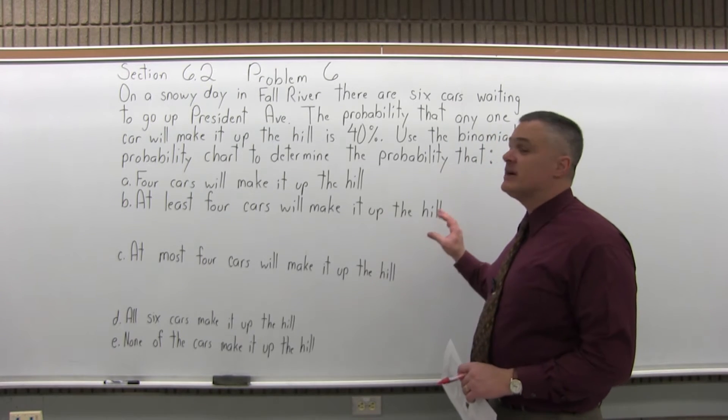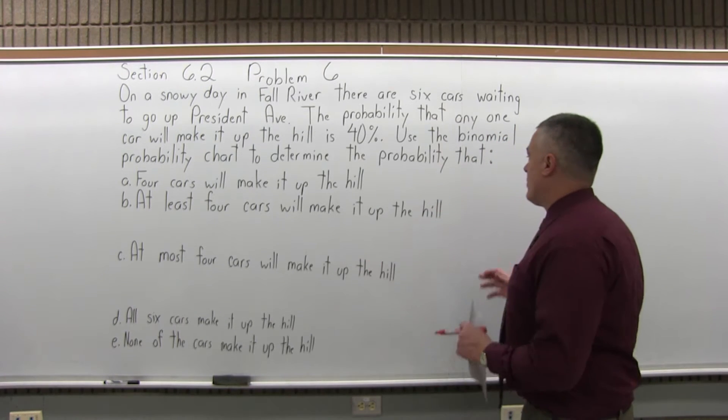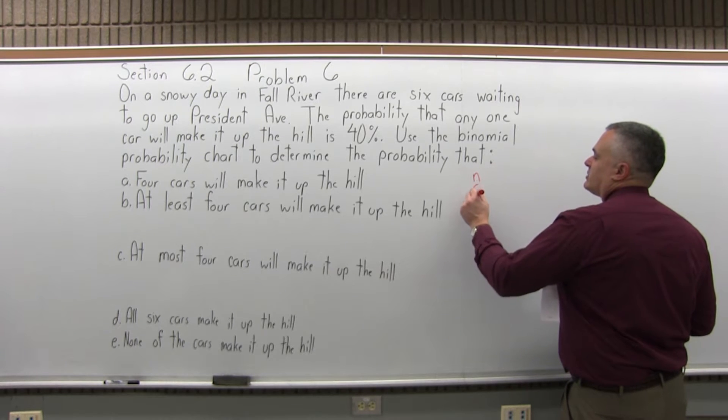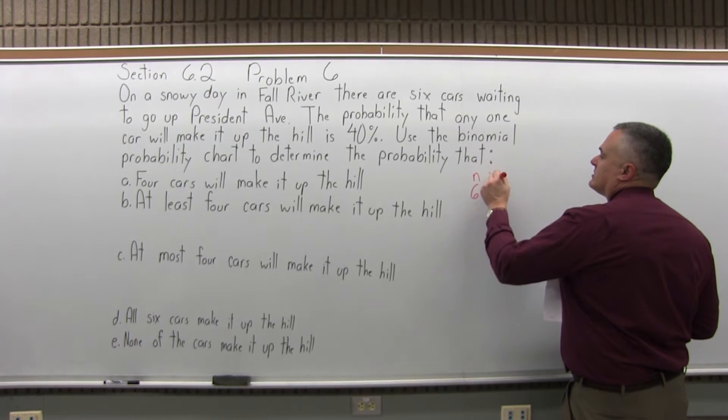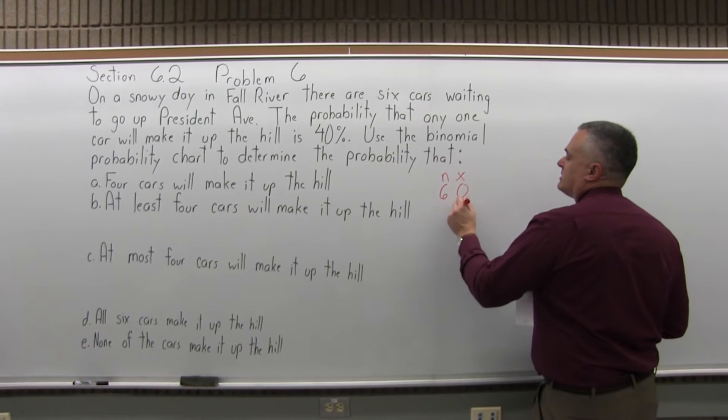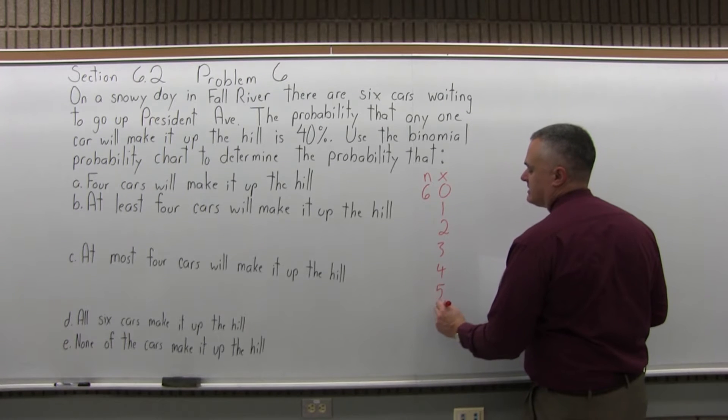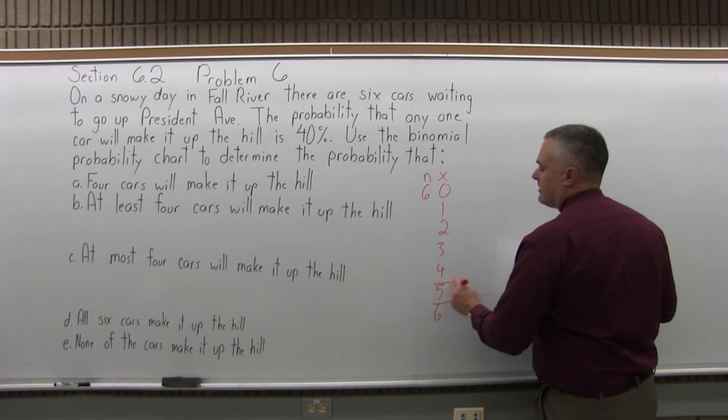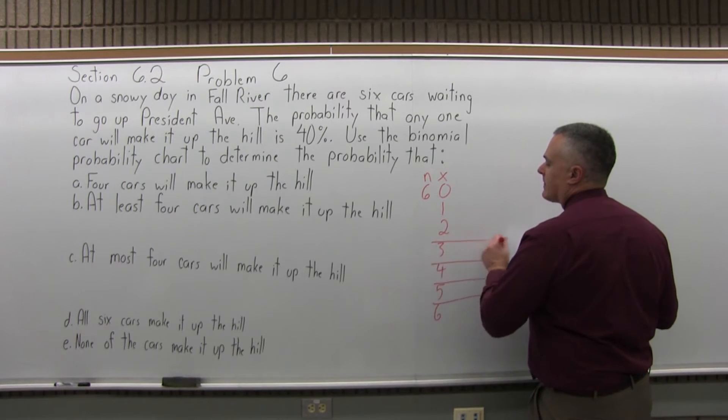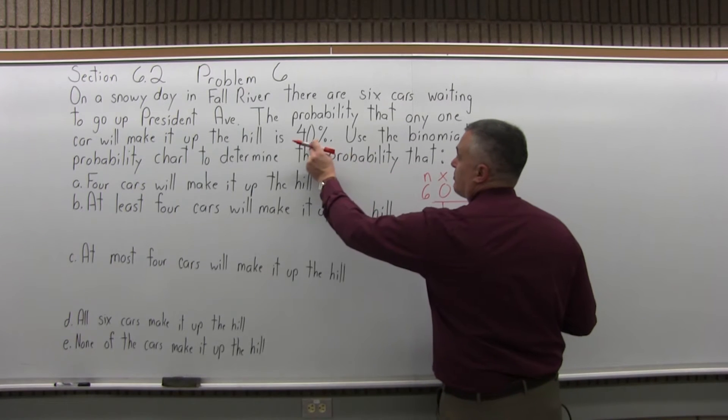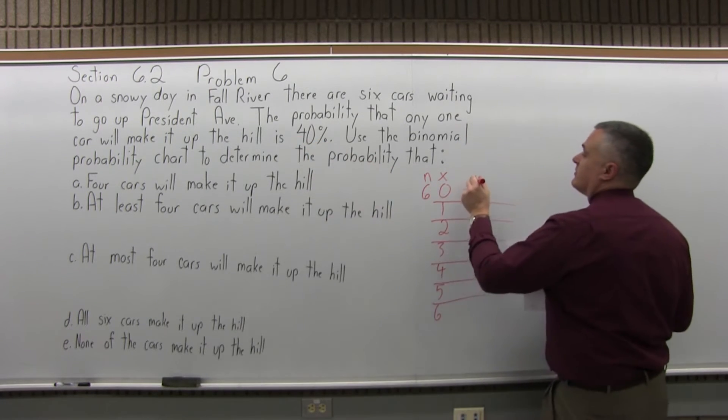First thing we have to do is look up in the chart for six trials. You'll find a part of the chart where N is six. The values of X will run from zero, one, two, three, four, five, and six. This chart will have many columns. You want to use a column under .40 because that's the number for 40%.